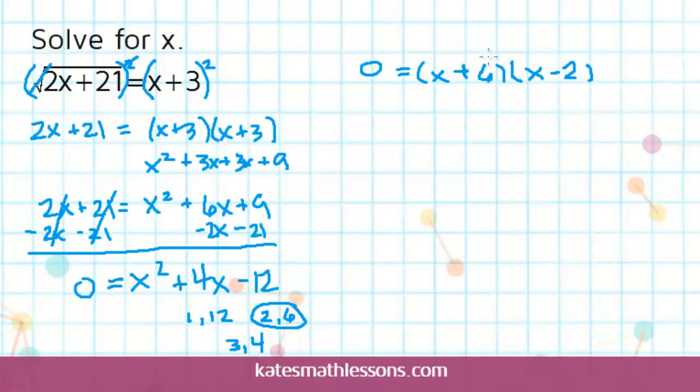So once you get it factored, you're going to use the zero product property. That says that if you have two values that are being multiplied to zero, one of them or both of them have to be zero. That's the only way you can get numbers to multiply to zero.